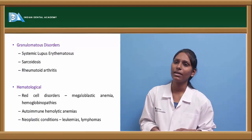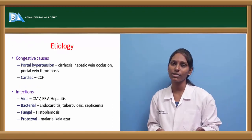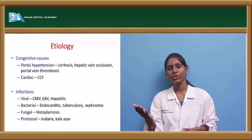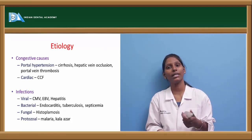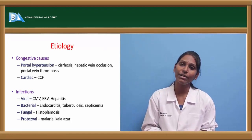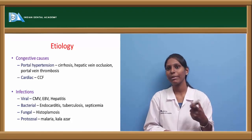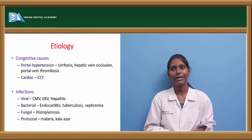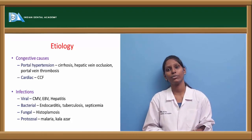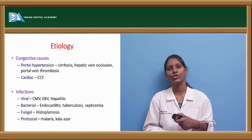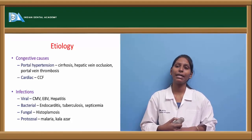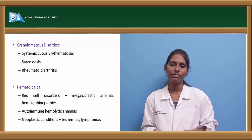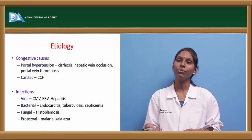The etiology of splenomegaly: one is congestive causes, usually because of portal hypertension — conditions such as cirrhosis, hepatic vein occlusion, or portal vein thrombosis can lead to splenomegaly. In case of congestive cardiac failure, splenomegaly can also be seen. Various infections such as viral infections — especially cytomegalovirus, Epstein-Barr virus, hepatitis — can lead to splenomegaly. Bacterial infections such as endocarditis, tuberculosis, and septicemia can also lead to splenomegaly. Fungal infections such as histoplasmosis, protozoal infections such as malaria, and Kala-Azar (which causes dum-dum fever) can also lead to splenomegaly.